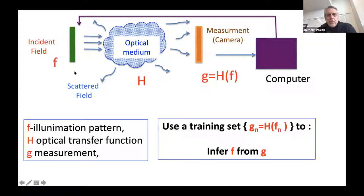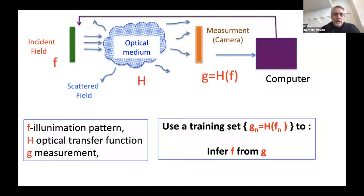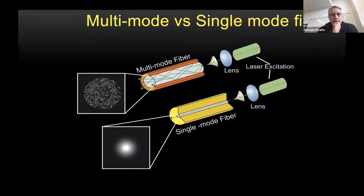For imaging you want the output g to be an image of the input f. With a nice lens or microscope that works fine, but for more complicated or bizarre situations you need to infer f from the measurement g. This is where machine learning comes in: inverting the system using a training set of examples, rather than inverse scattering or deterministic inversion.